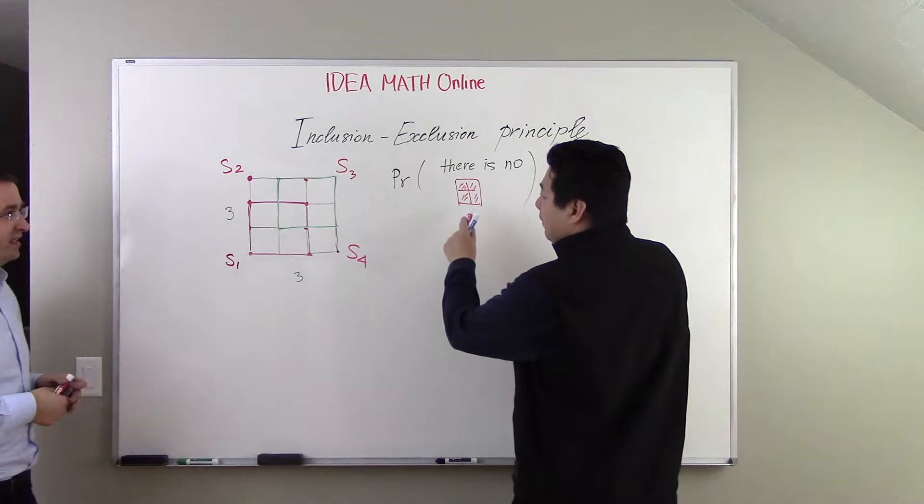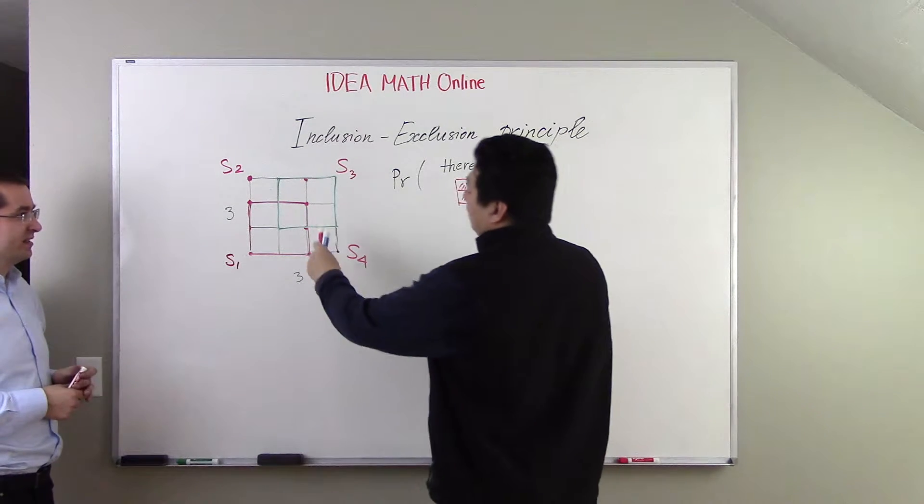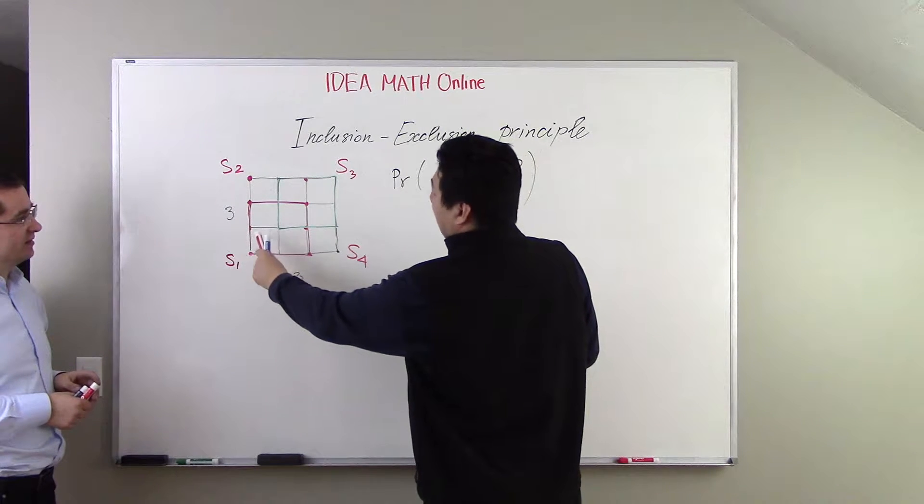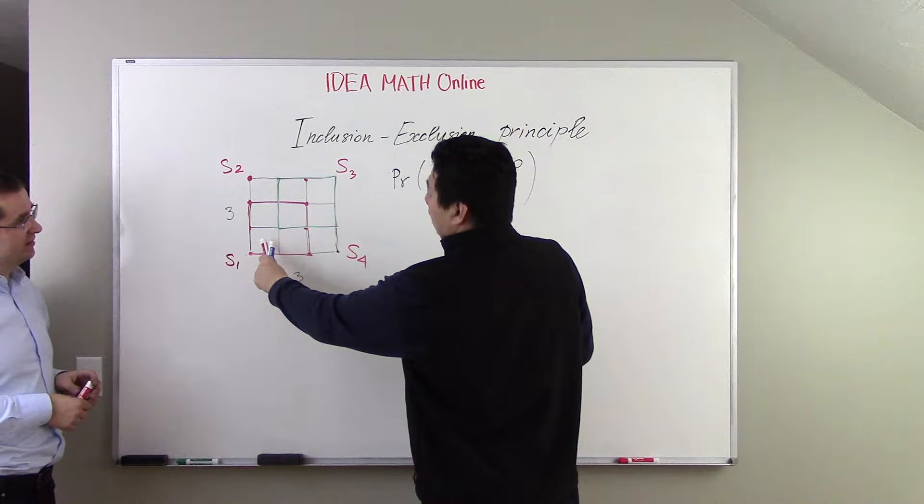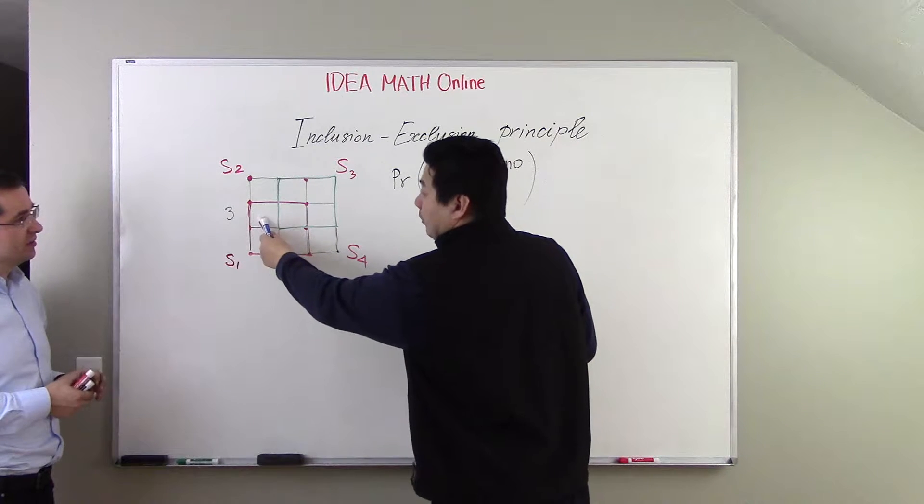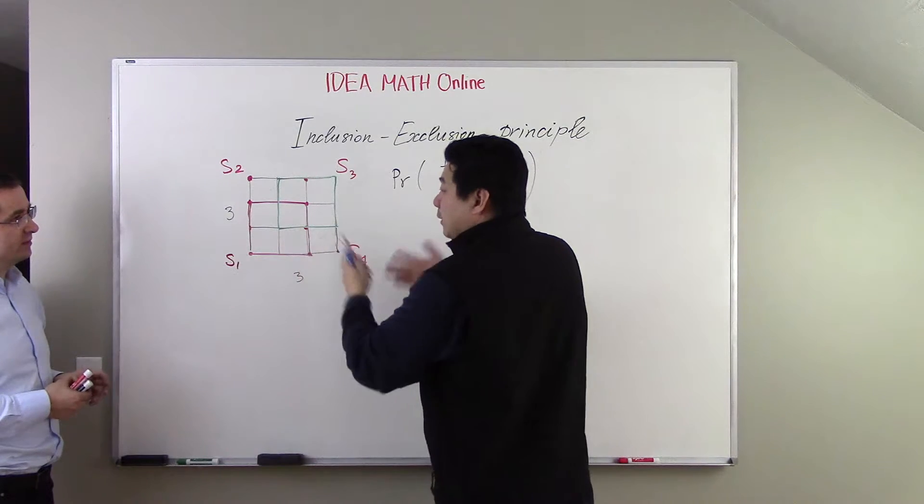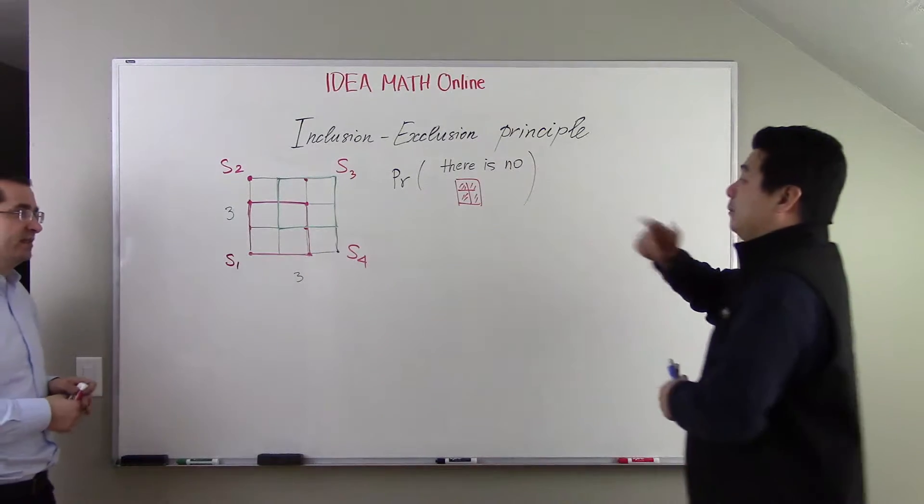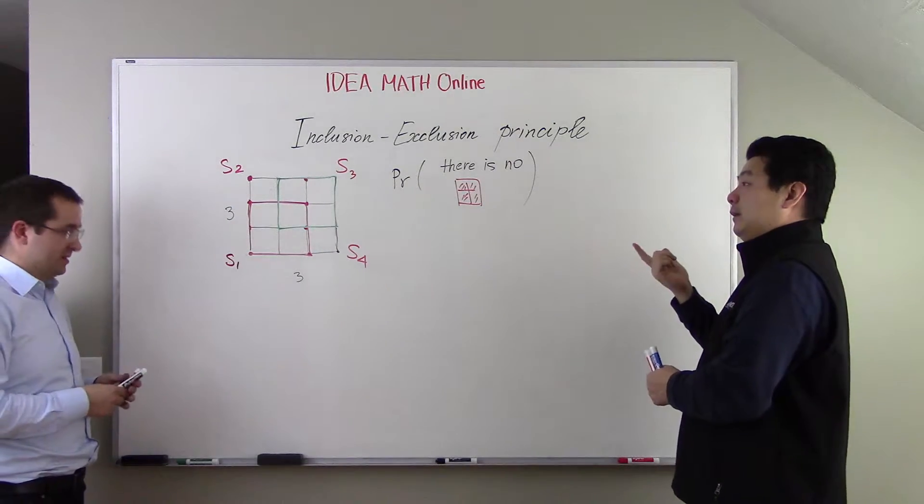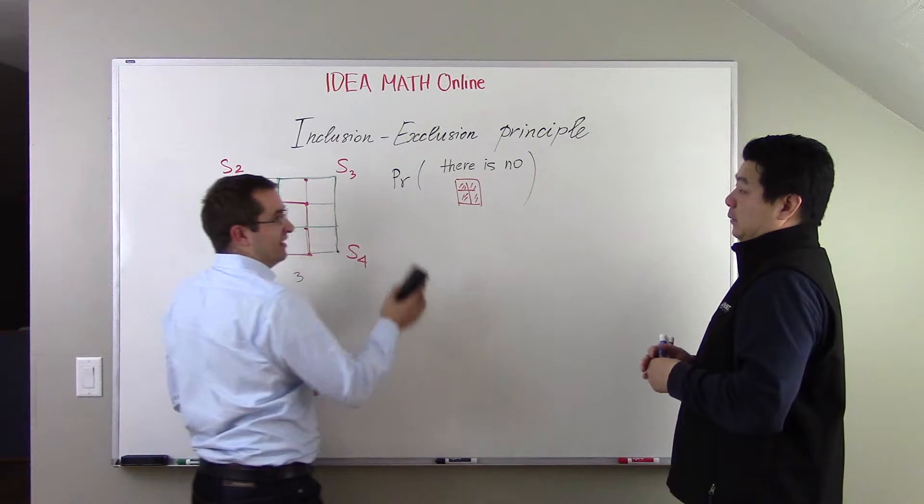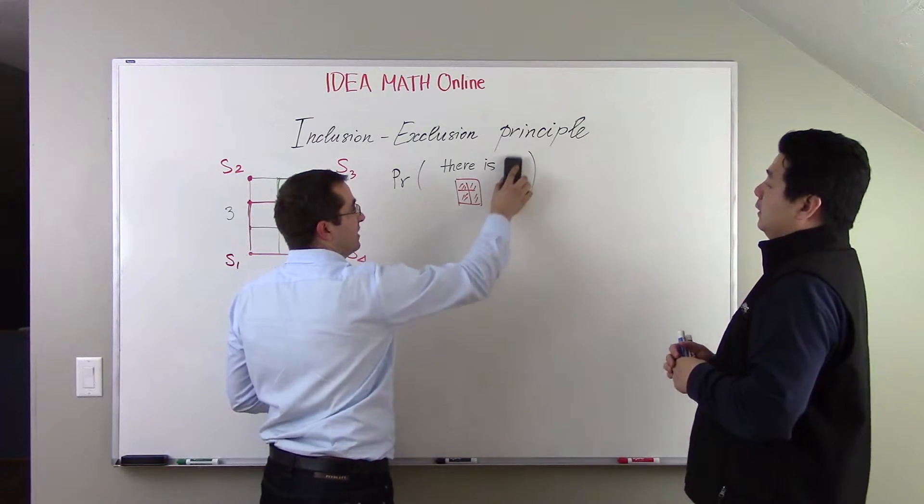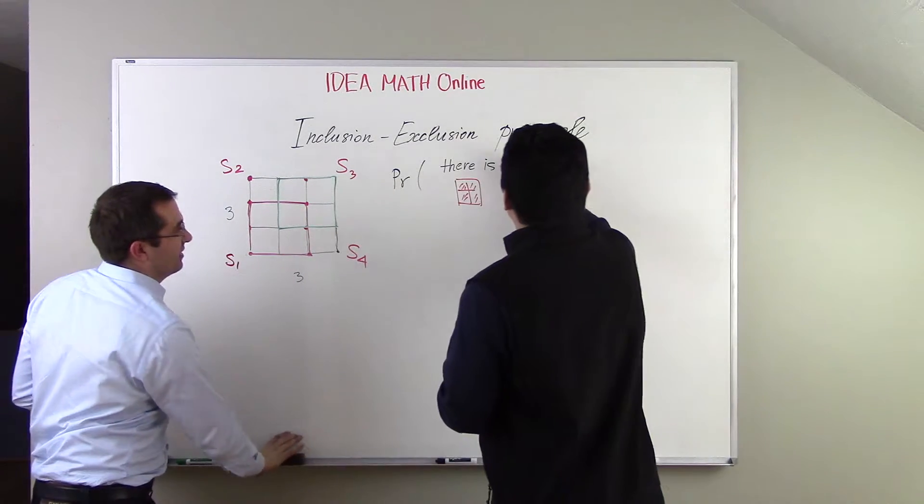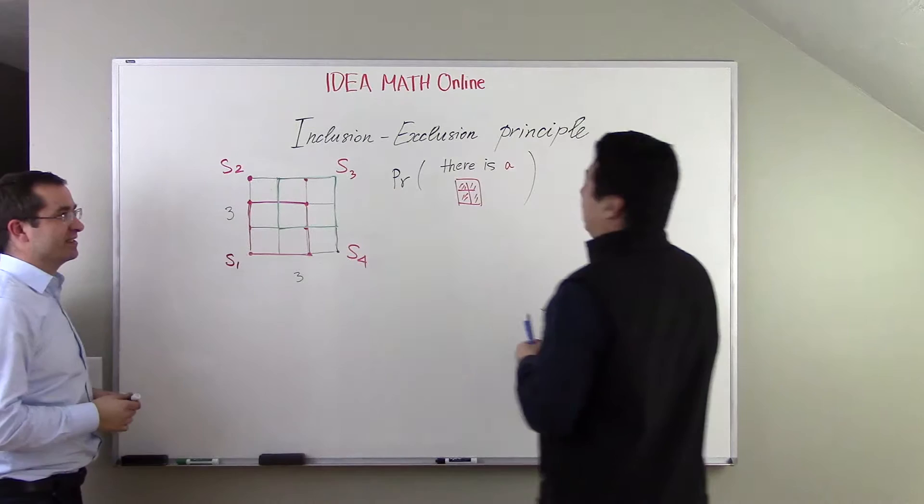Like you said, it might be easier to think about there is a square. Because for example, if at the beginning I look at it, there is no red square, I want to say okay I can place red and blue, two choices, red and blue, two choices, red and blue, two choices. It's so hard to control the color situation. It's much easier to ask myself, okay, I want to have one, a red square. So instead we will find the counter.